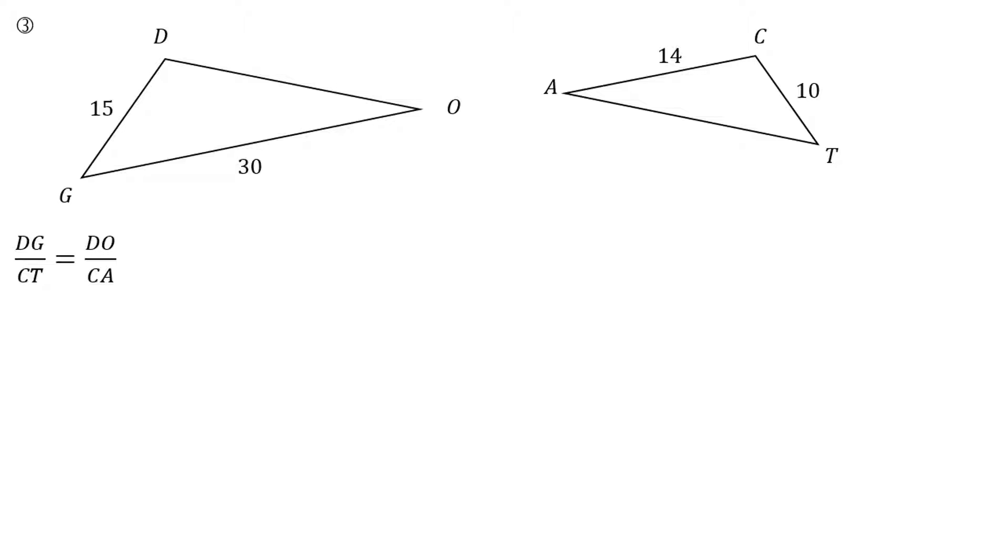Of course first I gotta figure out what side you match up with what, so I will take DG and compare it to CT, first of all because they're corresponding sides and second of all I actually know the value of DG and I actually know the value of CT. Now DO is one of the sides I'm looking for, so I have to grab that, and then of course it corresponds with CA. Substitute in the values I know, cross multiply. 15 times 14, I better grab a calculator, I don't usually have that one in my head. Divide each side by 10. 21.